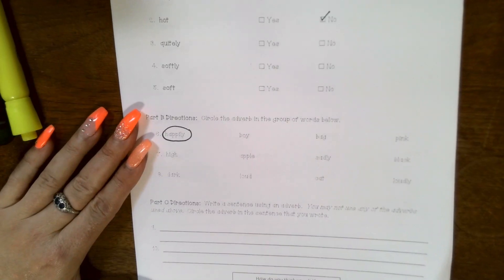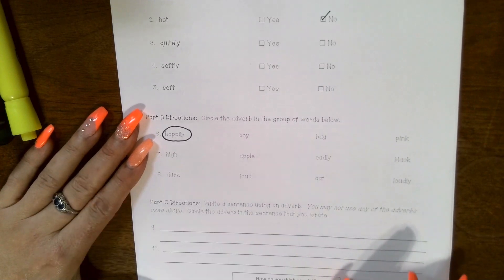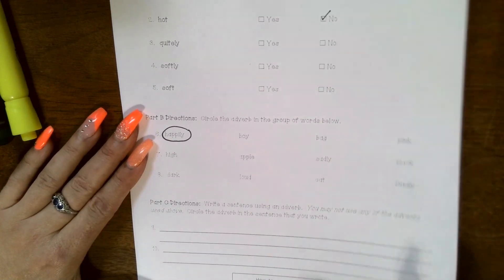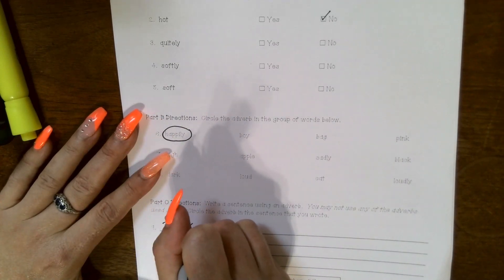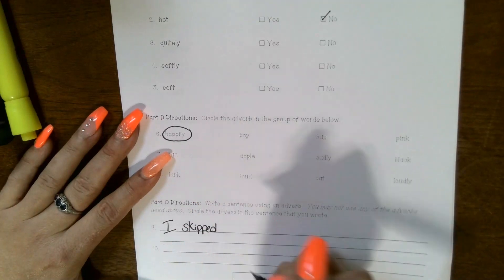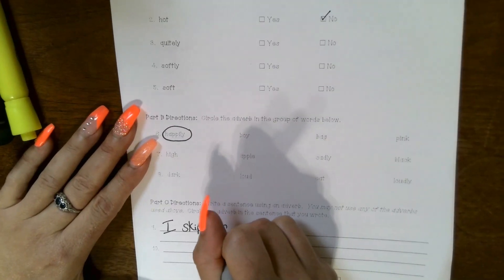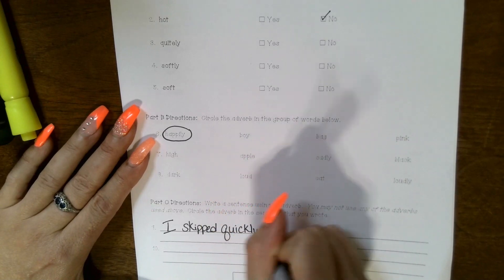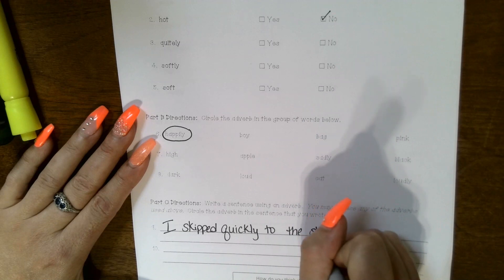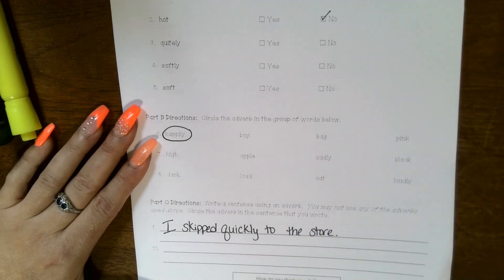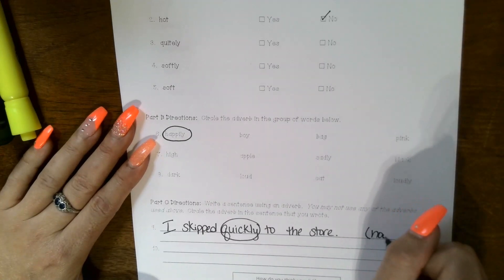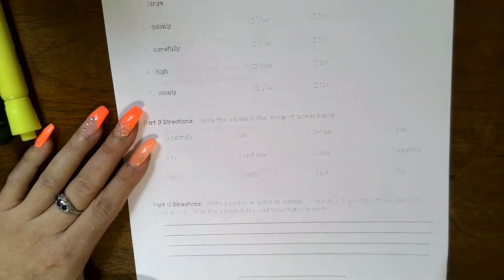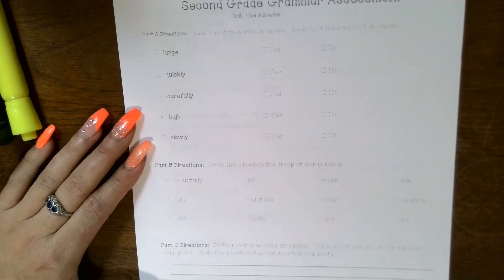For nine and ten, you have to write a sentence using an adverb, and you may not use any of the adverbs used above. Circle the adverb in the sentence that you wrote. So you're writing your own sentence with an adverb. I'll give you an example — and you can't use my example either. I skipped quickly to the store. Circling the adverb, which would be quickly — it tells how. How did I skip? I skipped quickly. You're following the same exact format on your next page.